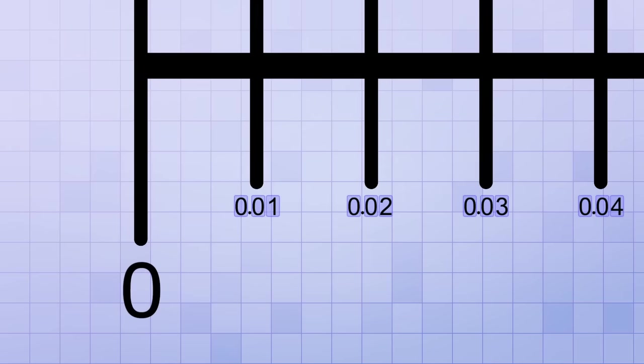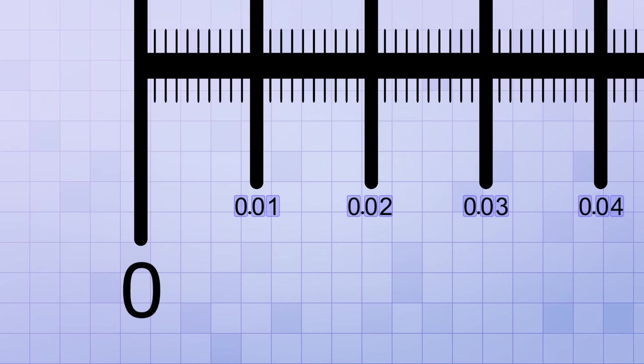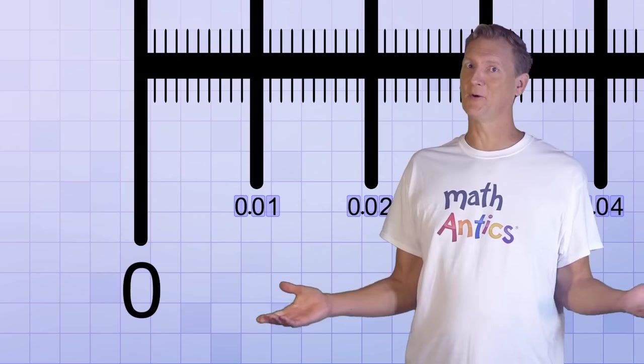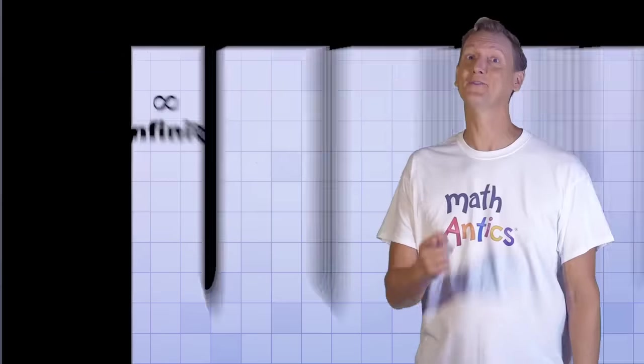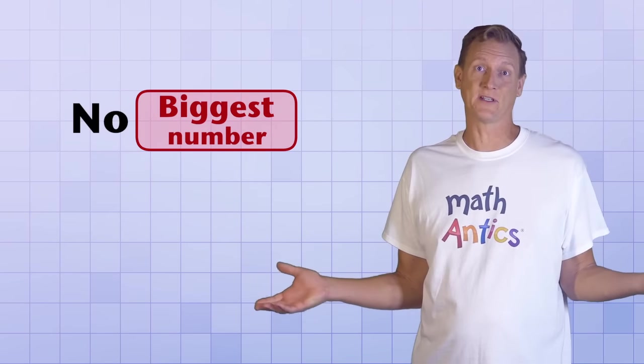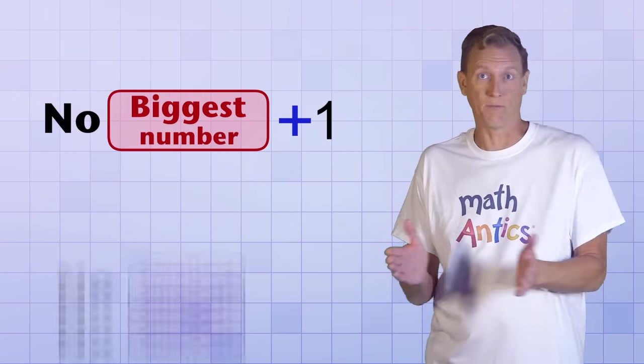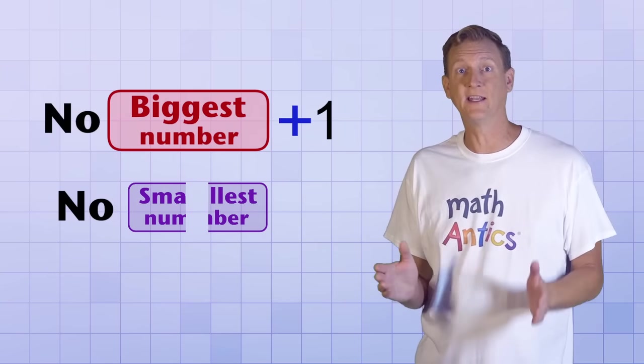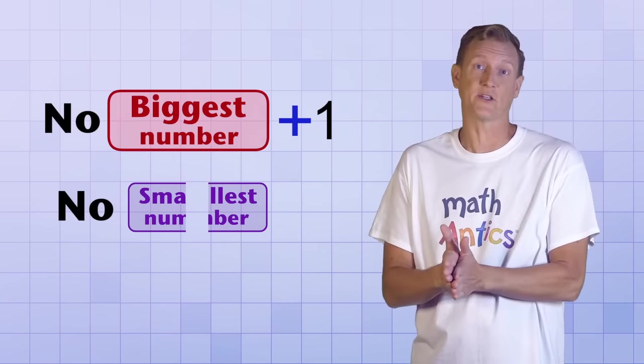But why stop at hundredths? If we divide the spaces between each hundredth into 10 equal parts, we'll get thousandths, which are even smaller fractions. Can you see where we're going with this? Yep, to infinity. Just like there's no biggest number because you can always keep adding one more, there's no smallest number either because you can always keep dividing whatever small fraction you have into even smaller and smaller fractions.